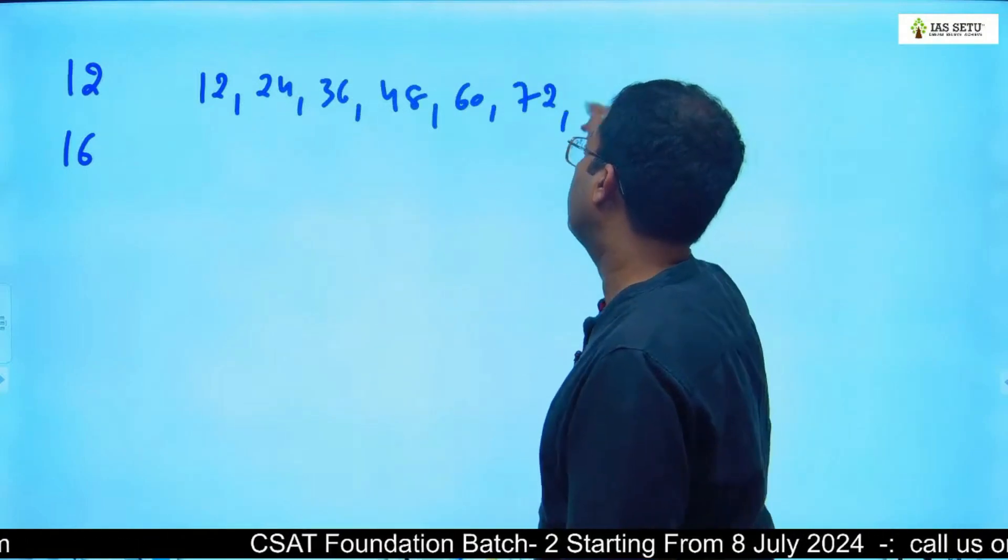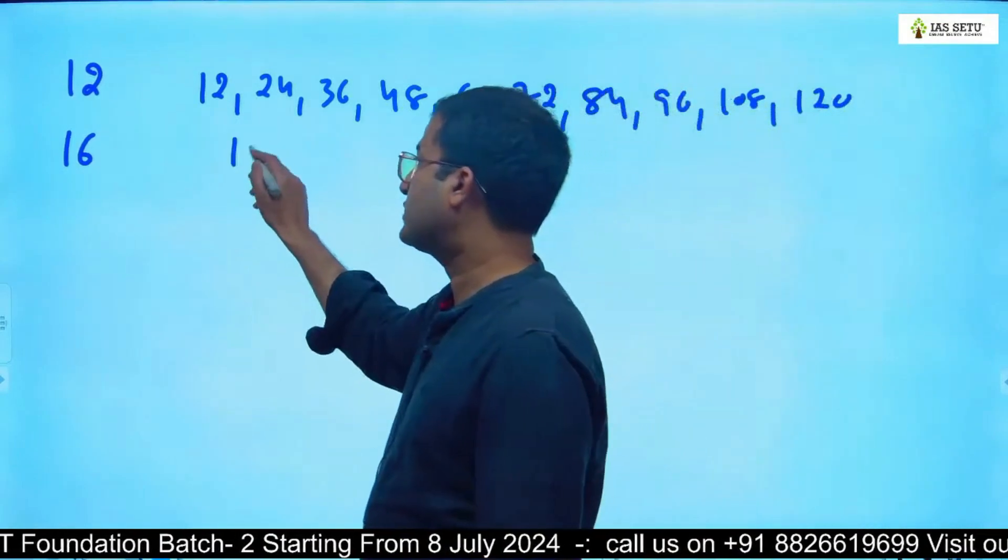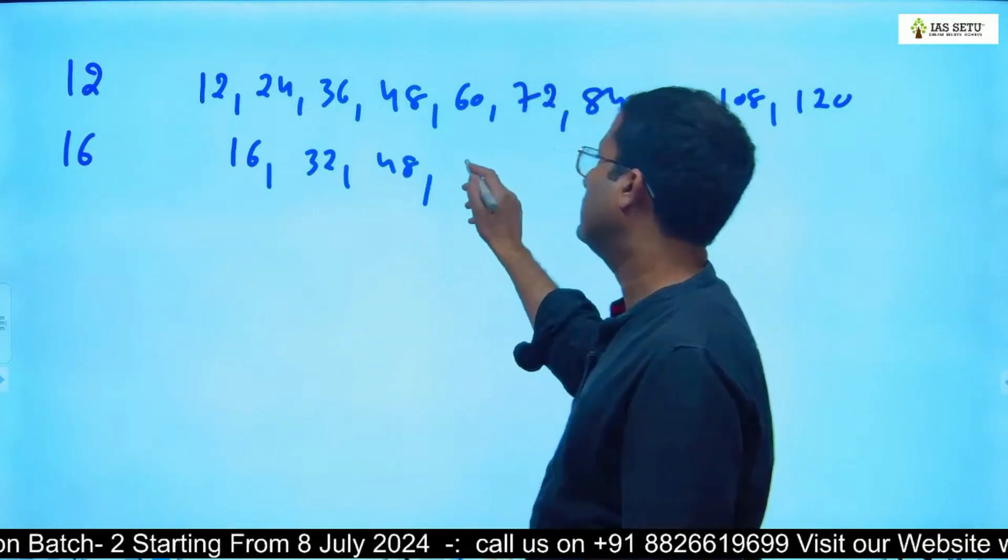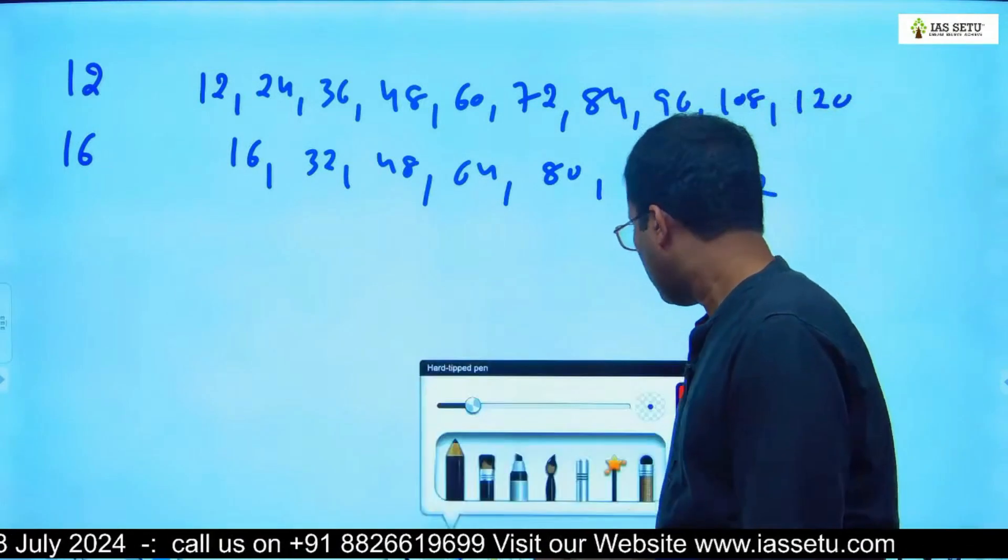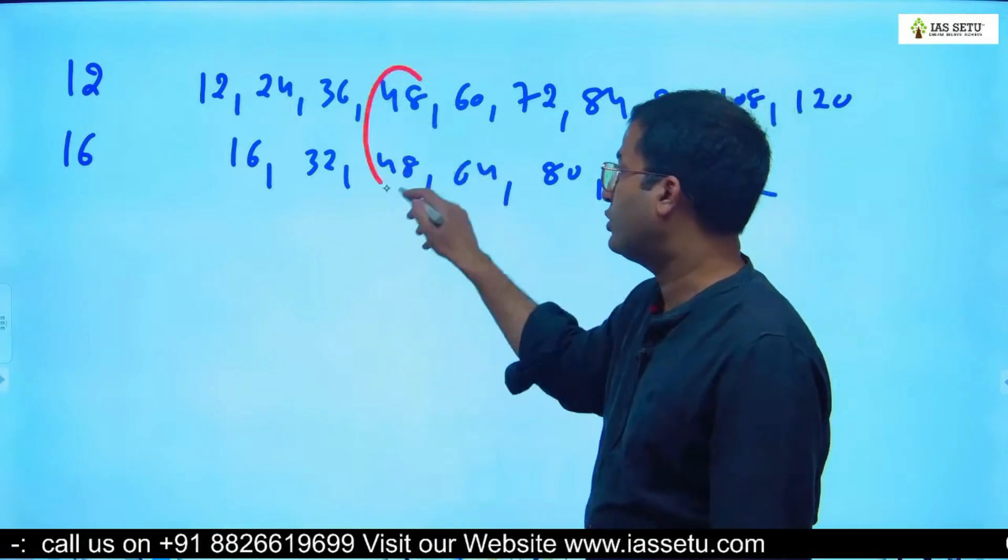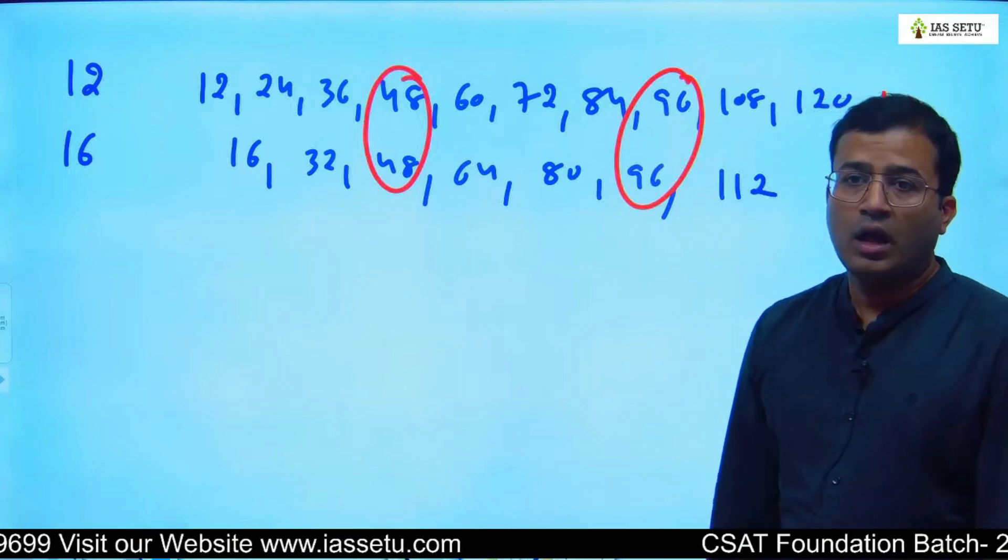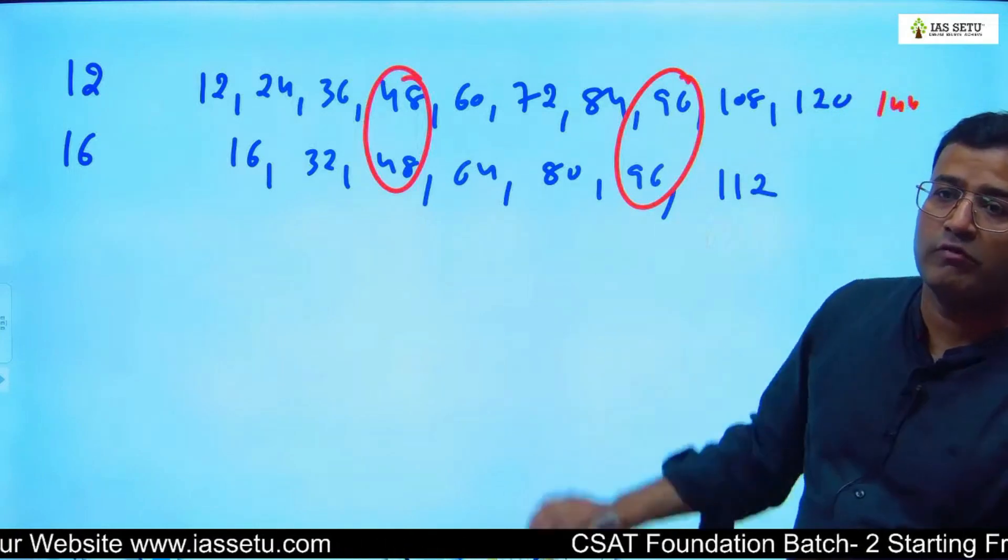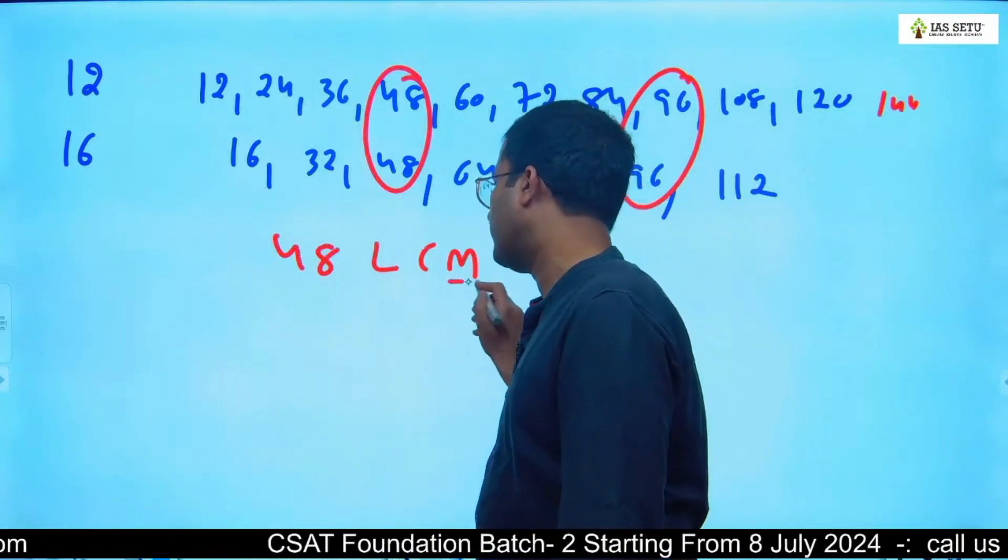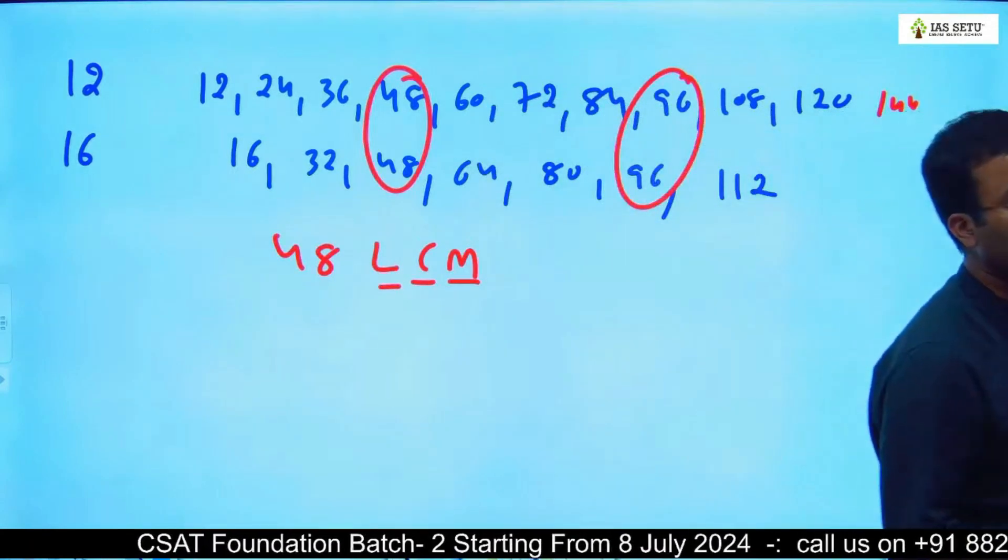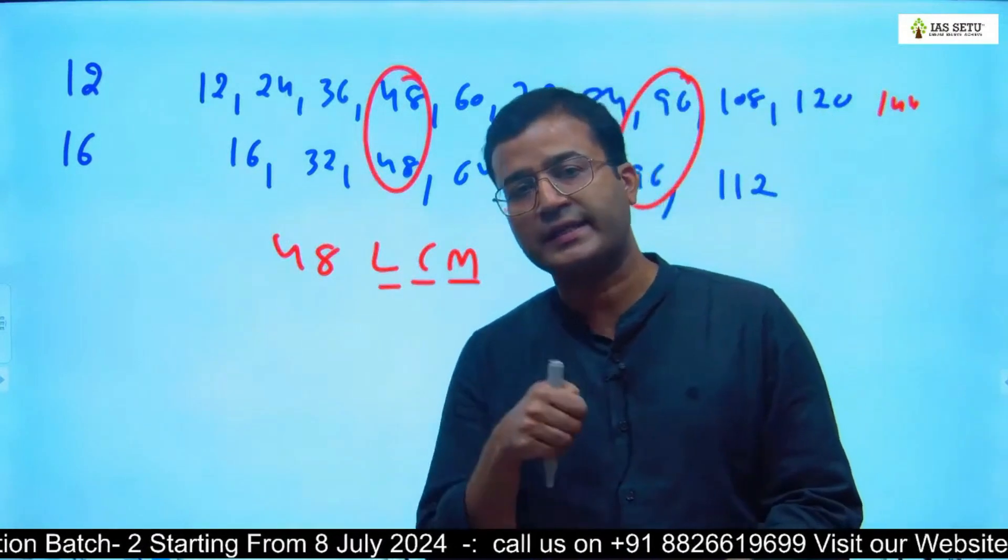Multiples of 16 are 16, 32, 48, 64, 80, 96. Out of these, the common multiples are 48, 96, 144, 180. Tell me which one is the least? 48. So your answer is 48 - that's the LCM.